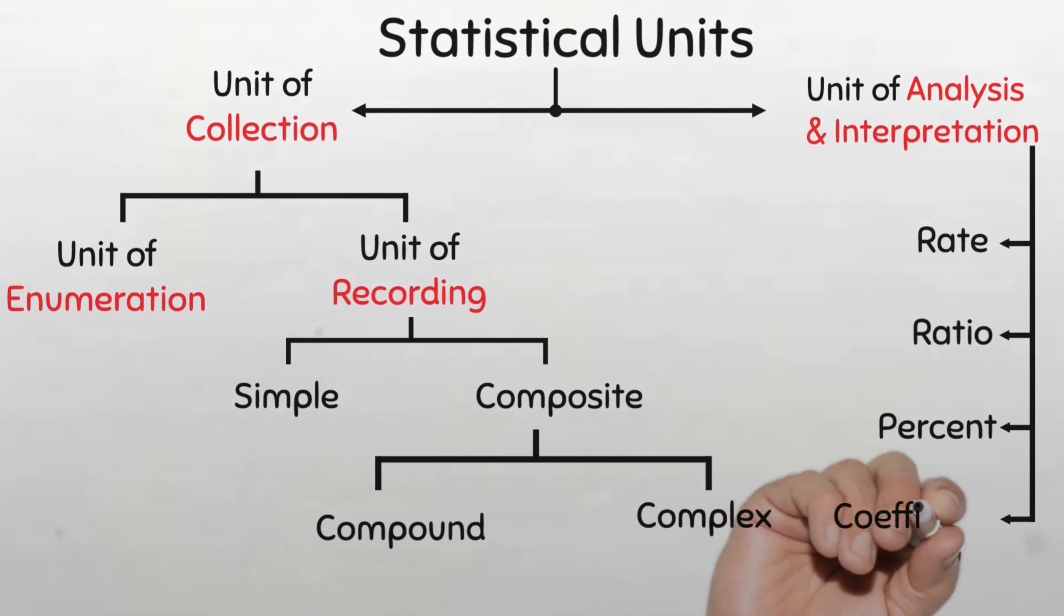And finally, we have the coefficient. This is simply a numeric value that represents the relationship between two variables in a statistical model. In a statistical analysis, the coefficient indicates how much one variable is expected to change for each unit change in another variable. So for example, if the coefficient of height in inches for predicting weight in kilograms is 2.3, what this simply means is that for each additional inch in the height of an individual, his weight is expected to increase by 2.3 kilograms.